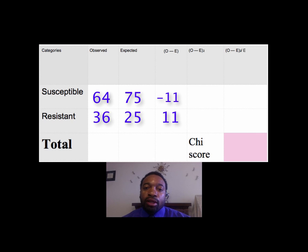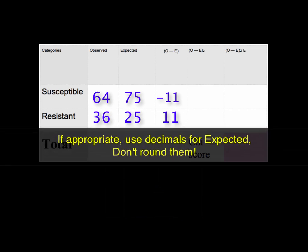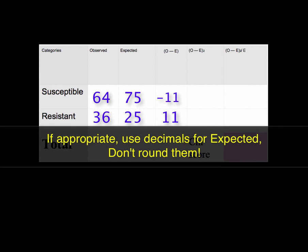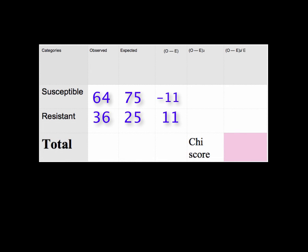A quick point: if the observed and expected numbers are decimals, that's okay — don't round any numbers. For example, if you expected 33.33, just write down 33.33. Plug in the numbers from the percent error, and once you get to the observed minus expected, square that number and divide by the expected. Pause the video, perform those calculations, and unpause when you're ready for the next step.